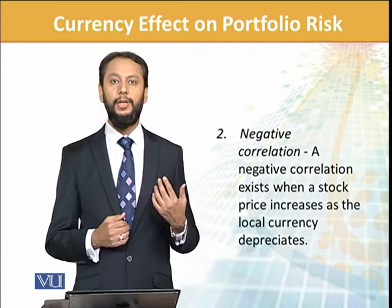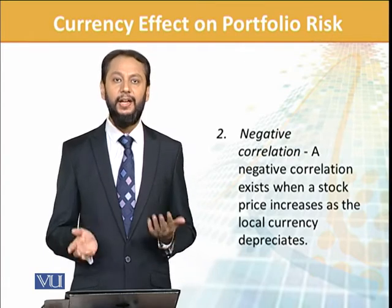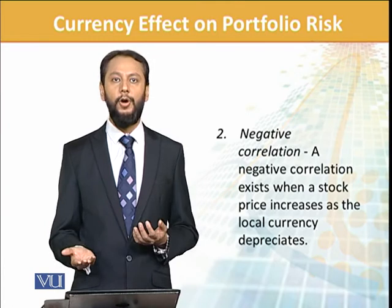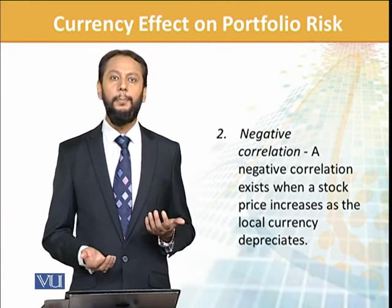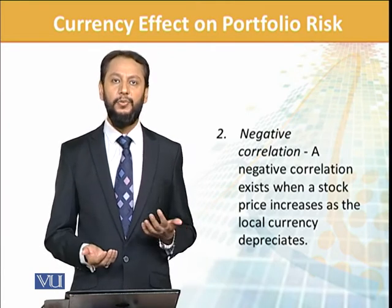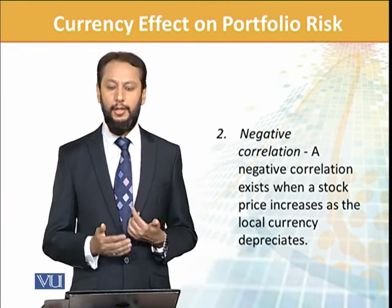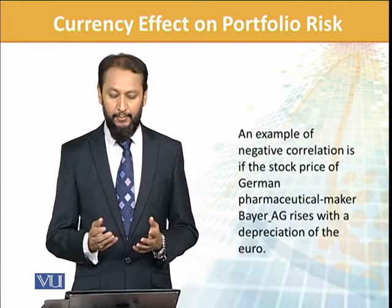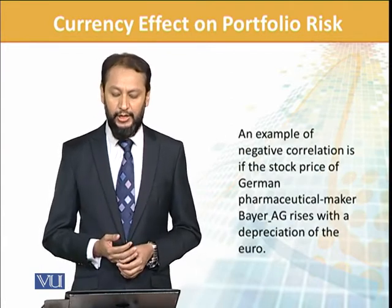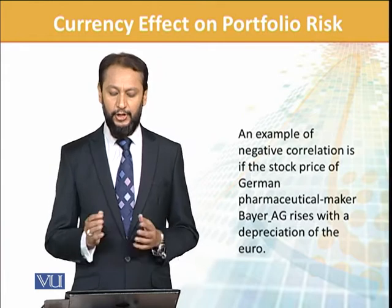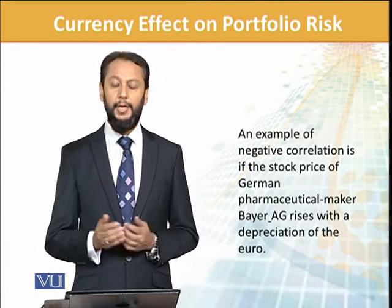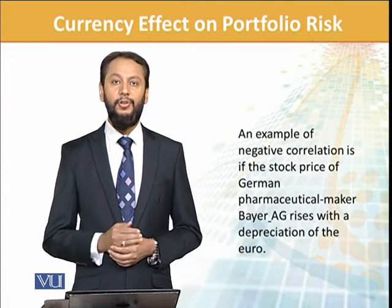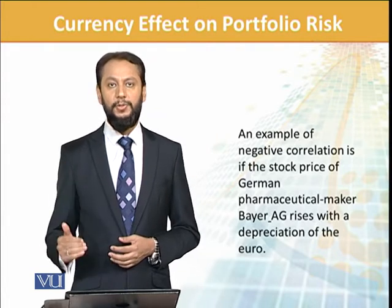So your stock price is likely to increase — it is a negative correlation here and you are getting a benefit out of it. An example of negative correlation is if the price of German pharmaceutical makers rises with the depreciation of the Euro — Euro depreciates and the stock price goes up.